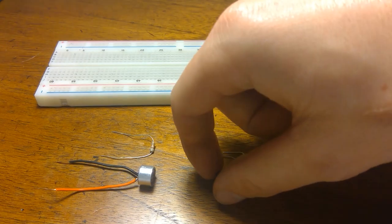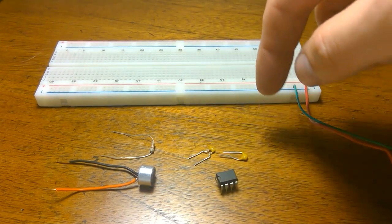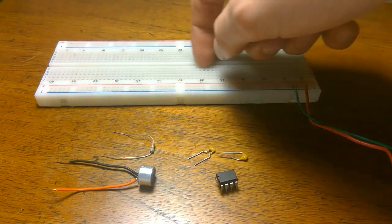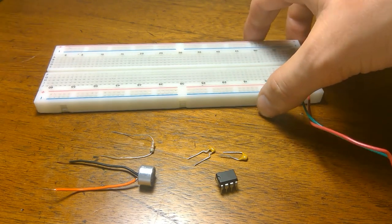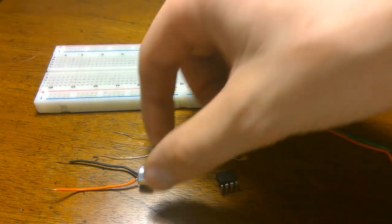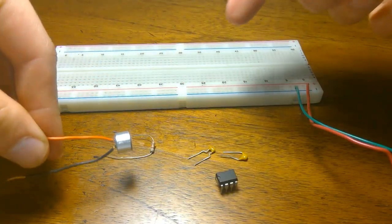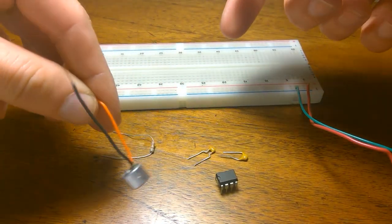This circuit only requires five components, which is nice, and it'll give you ample voltage for your Arduino input if you're using Arduino or if you need to amplify it even more. Basically we have five components here.